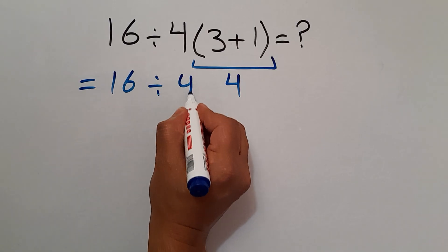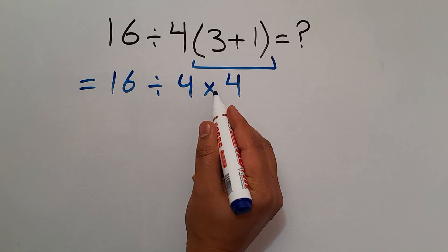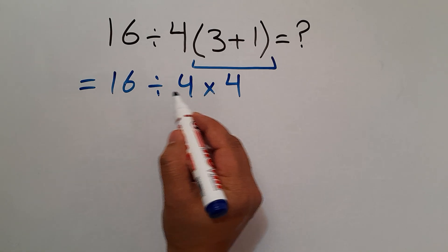And now we have one division and one multiplication. As we know, multiplication and division have equal priority and we have to work from left to right.